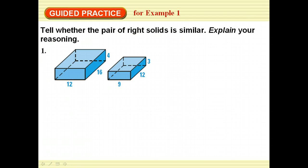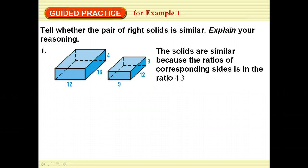So one for you to try to tell whether or not these are similar and explain your reasoning. The solids are similar because the ratios of the corresponding size is four to three. We got that by saying our width twelve to nine comes out to be four to three. The length sixteen to twelve comes out to be four to three. And then the height is simply four to three. So since all three of those are four to three, we know that they're similar.